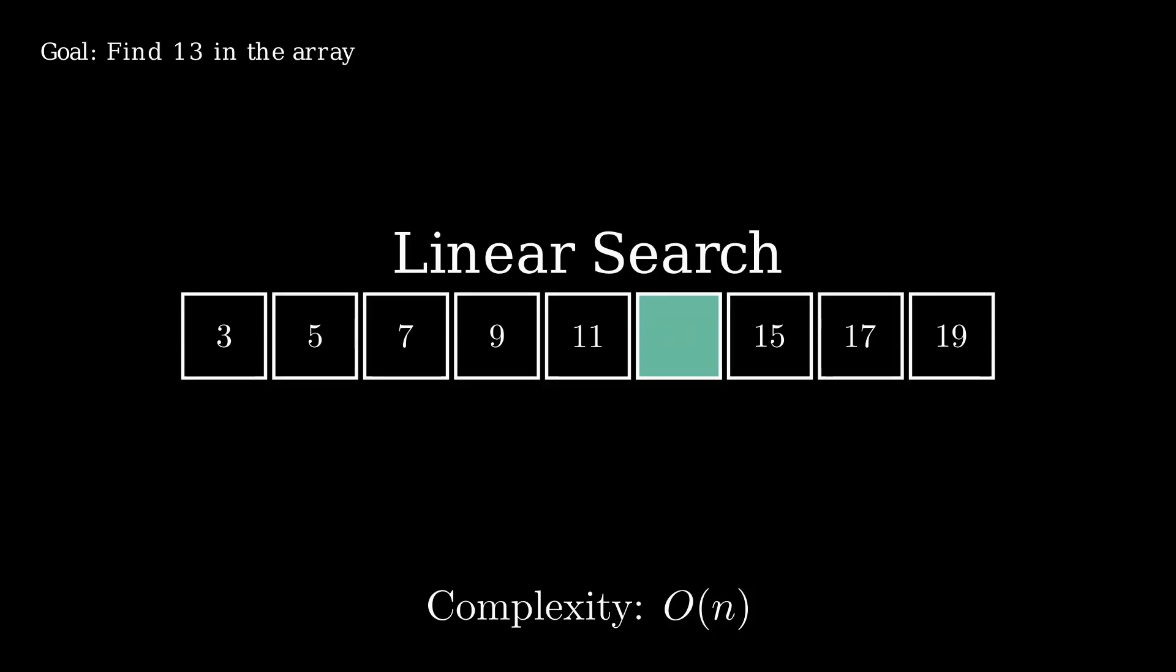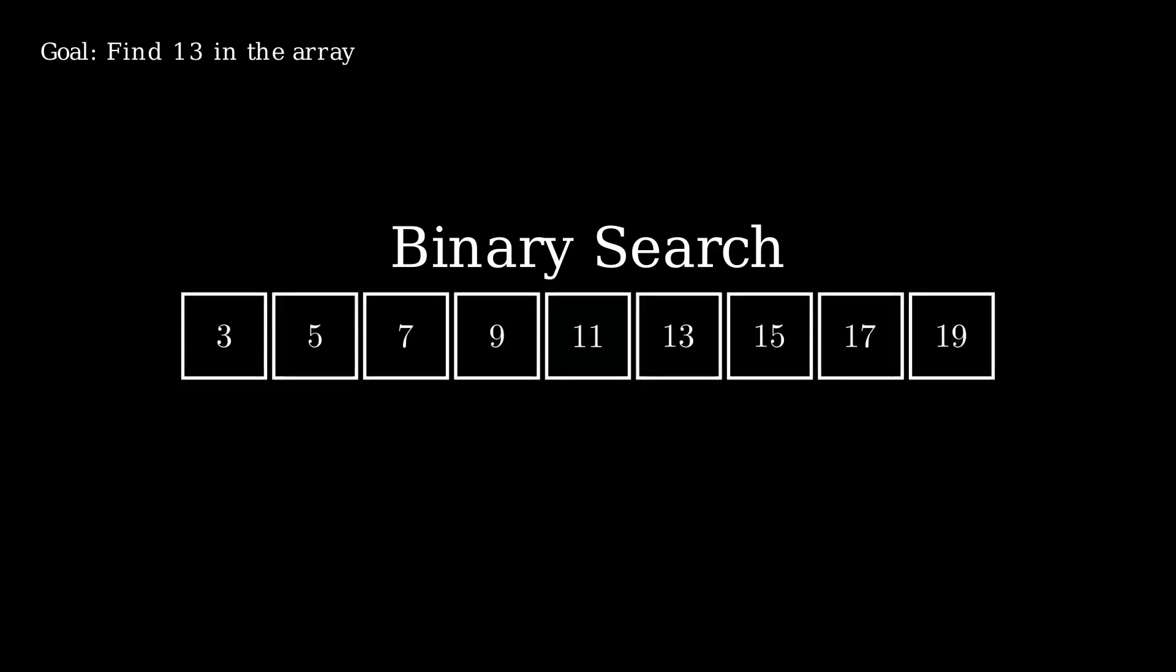If our array is sorted, however, we can use a more efficient form of searching known as binary search. To perform binary search, we store the leftmost and rightmost indices within which the value of interest must be contained, after which we iteratively set either the leftmost or rightmost index to the middle of these two indices, depending on whether or not the value of interest is greater than the value at the middle index or less, respectively.